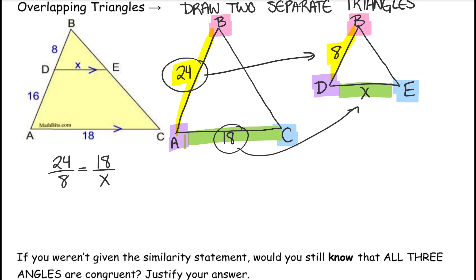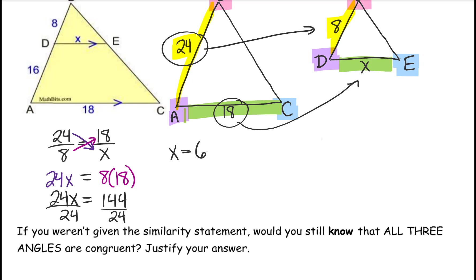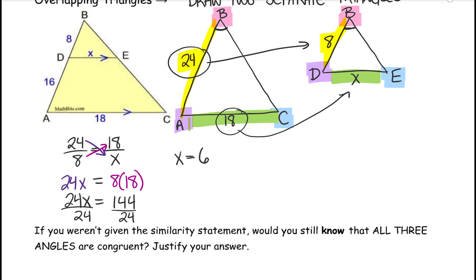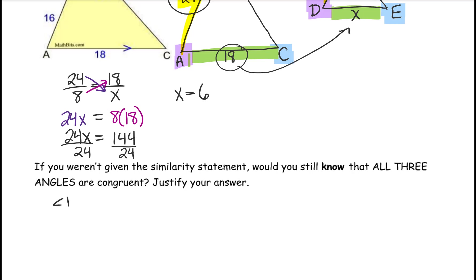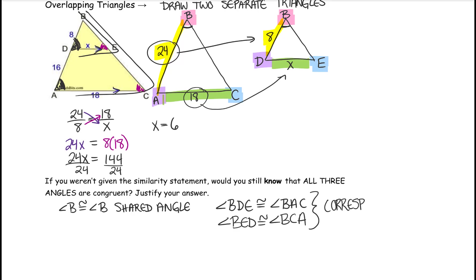It's time to cross multiply. If you weren't given the similarity statement, would you still know that all three angles are congruent? Angle B is angle B — they share that angle, which is called a shared angle. But angle A — how do I know that is congruent to angle BDE? If you noticed, there were parallel markings on those sides. So we have parallel lines. These angle relationships are corresponding angles. When the lines are parallel, the corresponding angles are congruent. In conclusion, similar shapes have congruent angles and corresponding side ratios are equal.